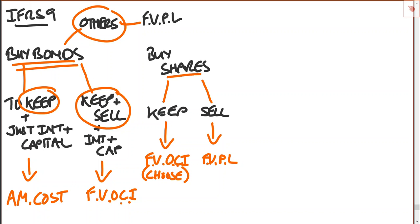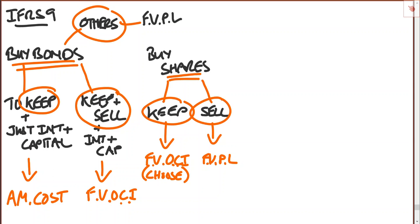If you're in any doubt, go with fair value through profit and loss. So again with shares, it's about what you're going to do with them: if you're going to keep them, choose fair value through other comprehensive income; if you're going to sell them, fair value through profit and loss. You can treat them at fair value through profit and loss at any stage if you don't choose the fair value through OCI election. Those essentially are the financial assets.